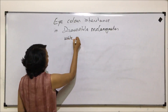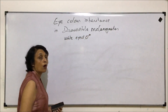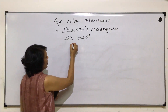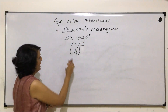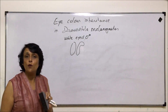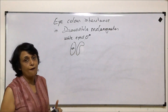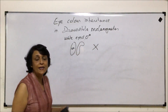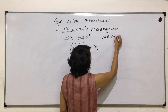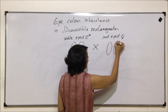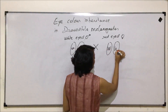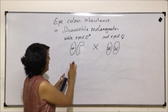Our cross starts with the white-eyed male mutant that Morgan found. The gene for eye color is located on the X chromosome. For the male, the chromosomes are X and Y. Because the male was white-eyed, it must carry small w on the X chromosome, and there is no gene on the Y chromosome. This mutant white-eyed male is crossed with a normal red-eyed female, which has two X chromosomes, each carrying capital W — pure dominant.